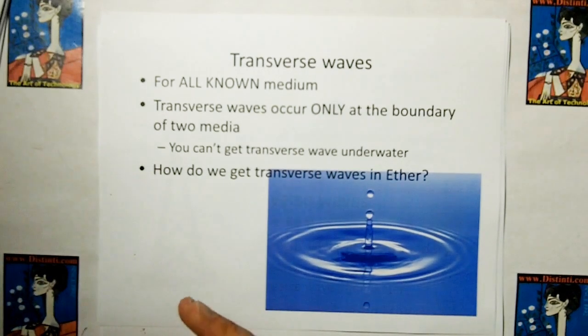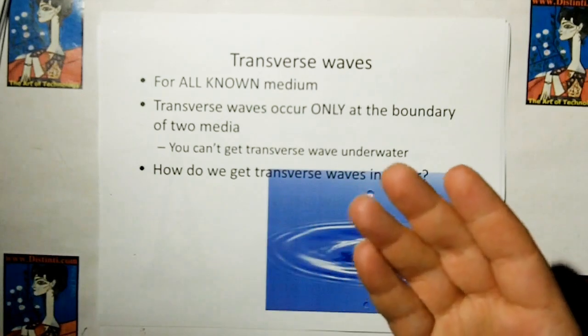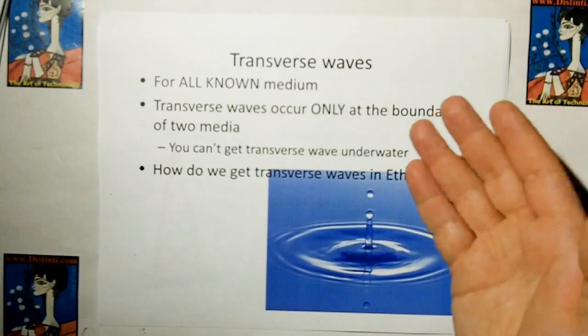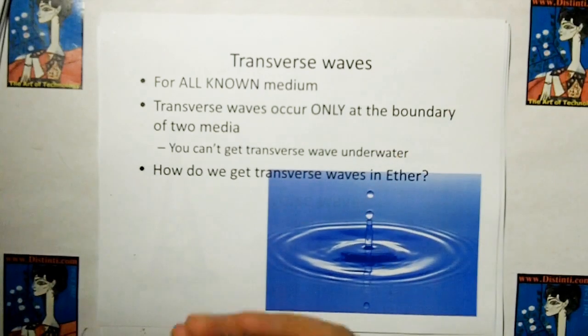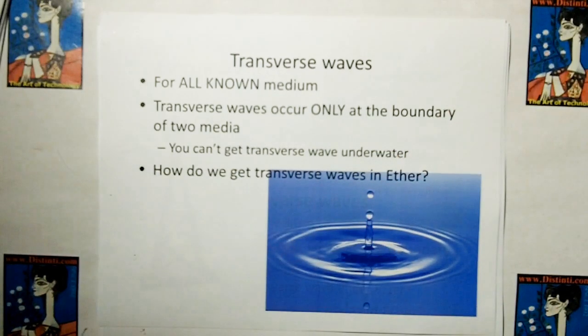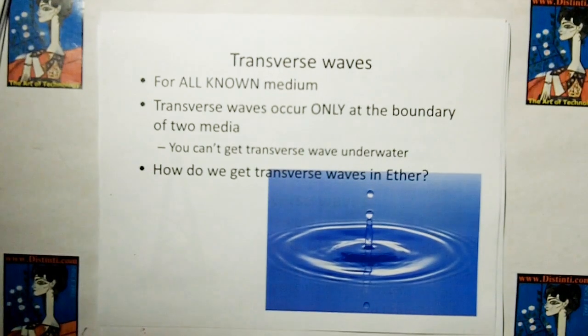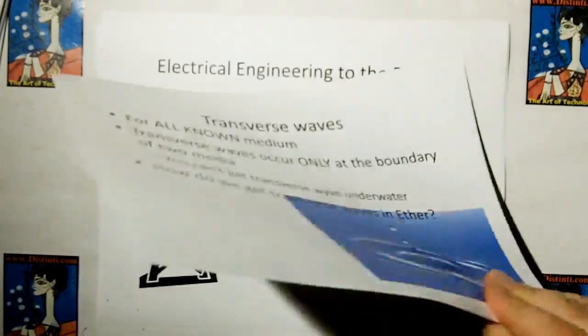I mean, you can't get transverse waves underwater unless you have cavitation. But other than that, if you have cavitation, you basically have two medium. You have the water vapor which is created from the cavitation and the water, so you have two medium. So the only way you can get transverse waves in water is if you have two medium. So how do we get transverse waves in ether?